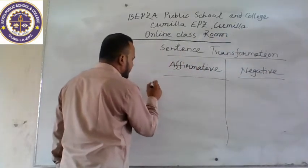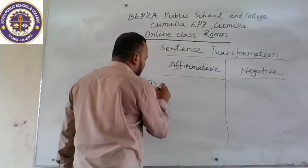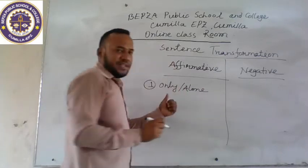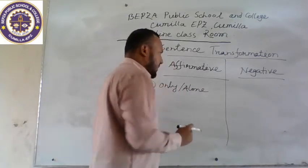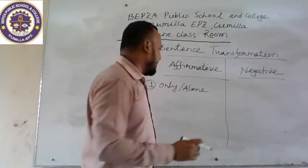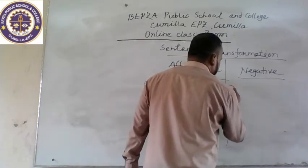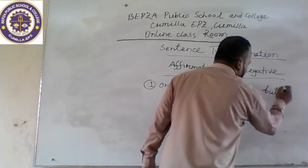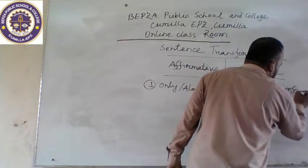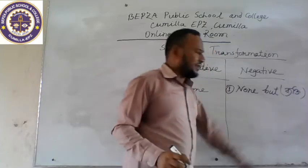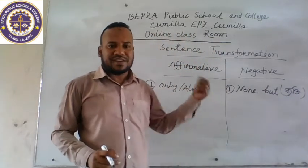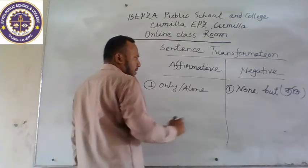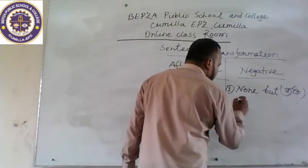Number one: if you get 'only' or 'alone' in an affirmative sentence and you want to change it into negative, then you use 'none but.' When it denotes any individual or any person, you use 'none but.'